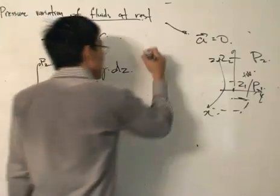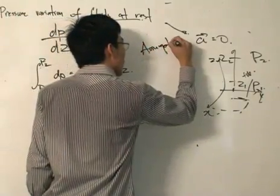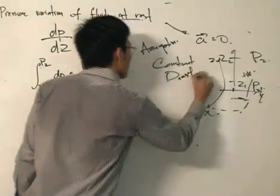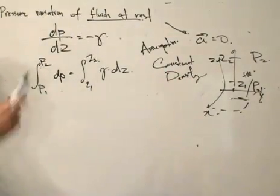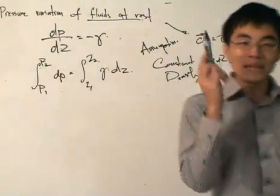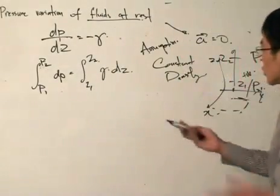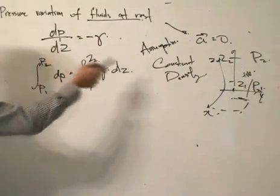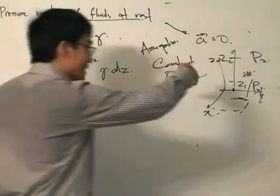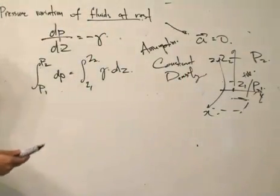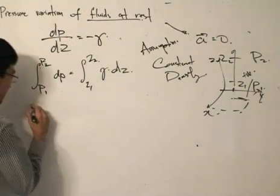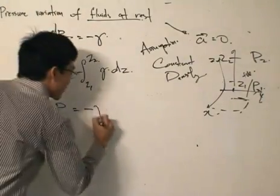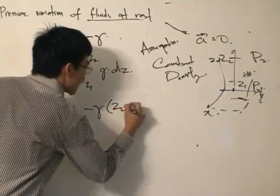We implement the assumption of constant density, meaning the liquid is incompressible. For liquids, this is a fair assumption since we can't compress them. For gases, non-constant density would need a separate treatment. After integration: p2 − p1 = −γ(z2 − z1).